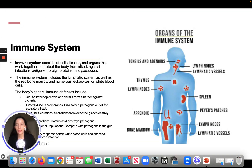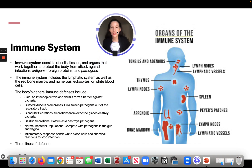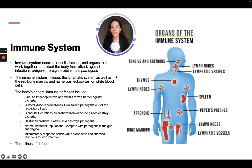The immune system consists of cells, tissues, and organs that work together to protect the body from attack against infections, antigens, foreign proteins, and pathogens. The immune system includes the lymphatic system as well as the red bone marrow and numerous leukocytes or white blood cells.